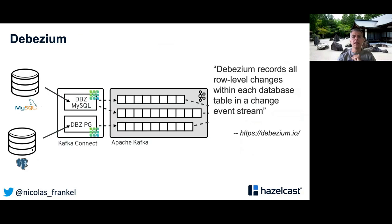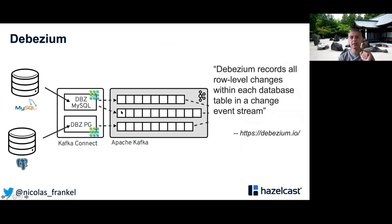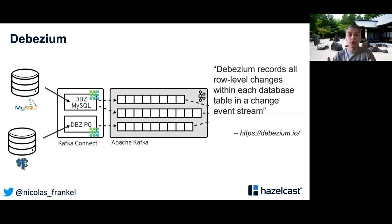As I mentioned, Debezium is very skewed toward Kafka. By default it's available as a Kafka connector — you set up your Kafka architecture, deploy the JAR, and every change is sent to topics in Kafka. That's an issue sometimes, because you don't always want to use Kafka. The benefit of Kafka is persistence, but the downside of Kafka is also persistence — it means you need to access the disk. And of course, accessing the disk takes a lot more time than accessing memory.